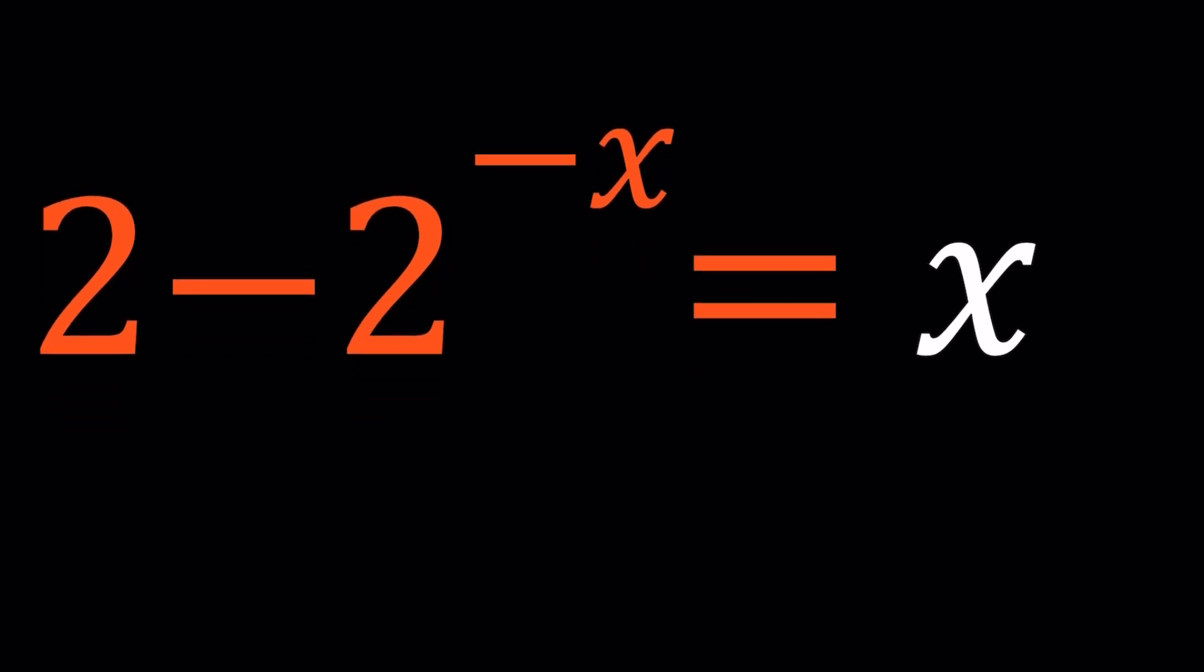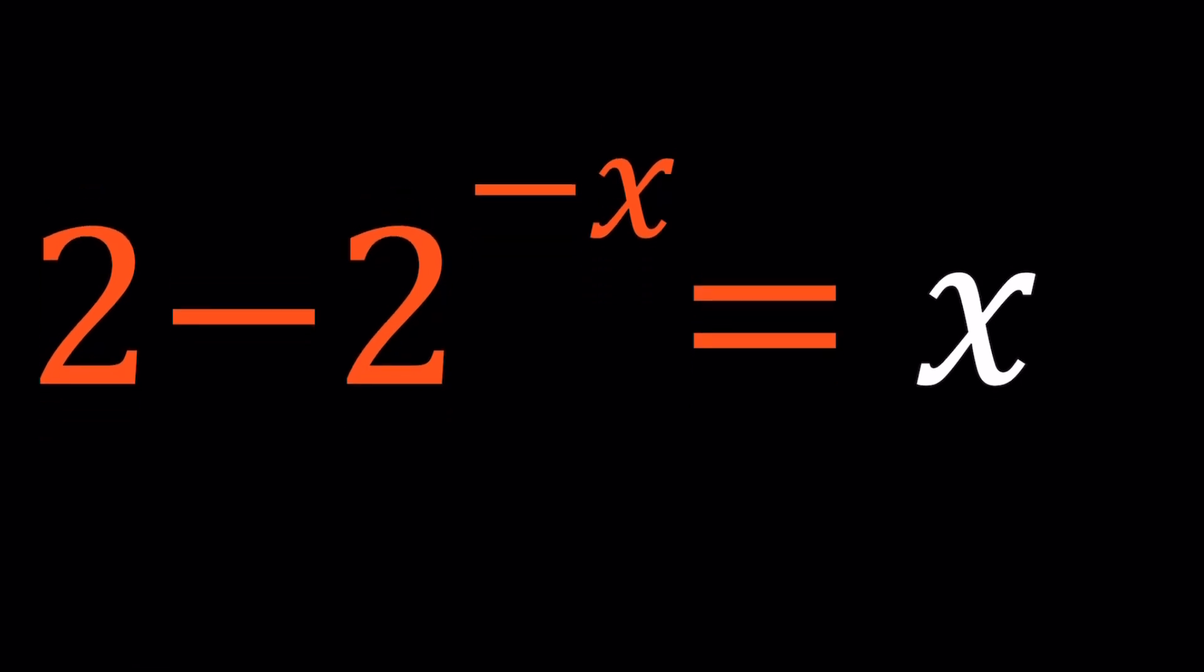In this equation, first of all I want to do a couple different things. I'm going to do a lot of manipulations: dividing both sides by something, multiplying, adding, subtracting, whatever. First, I'd like to subtract x and add 2 to the power negative x. So 2 minus x equals 2 to the power negative x.